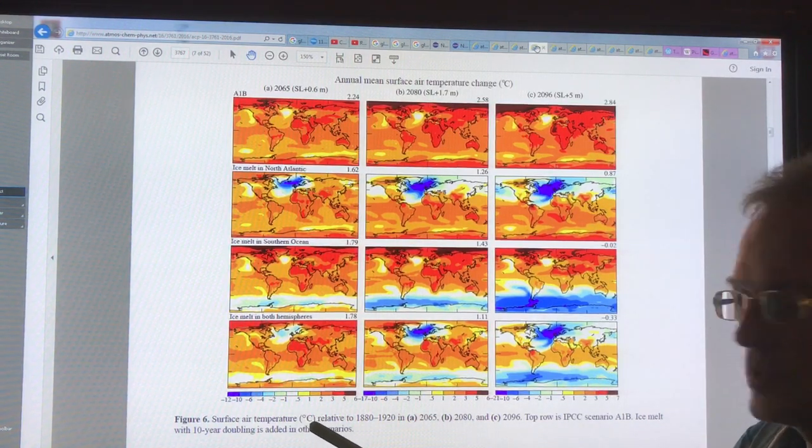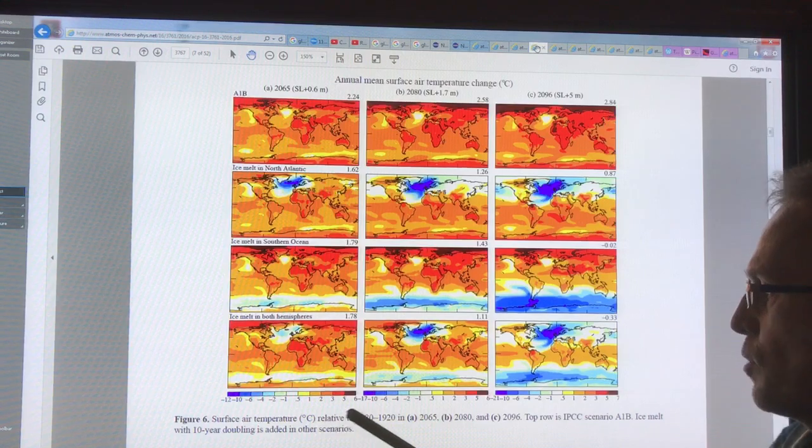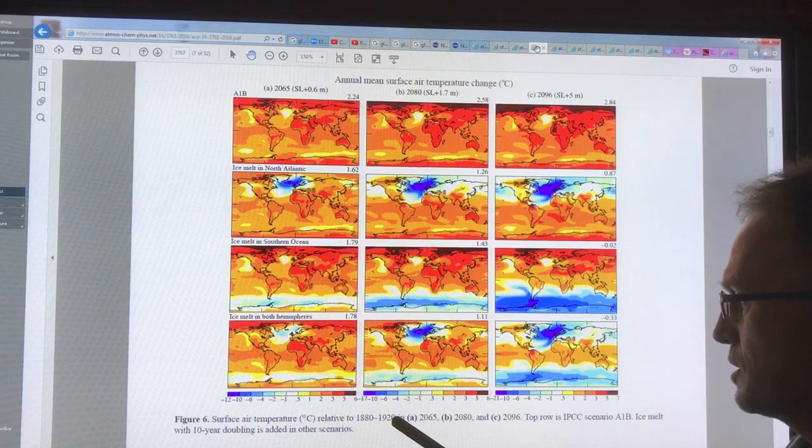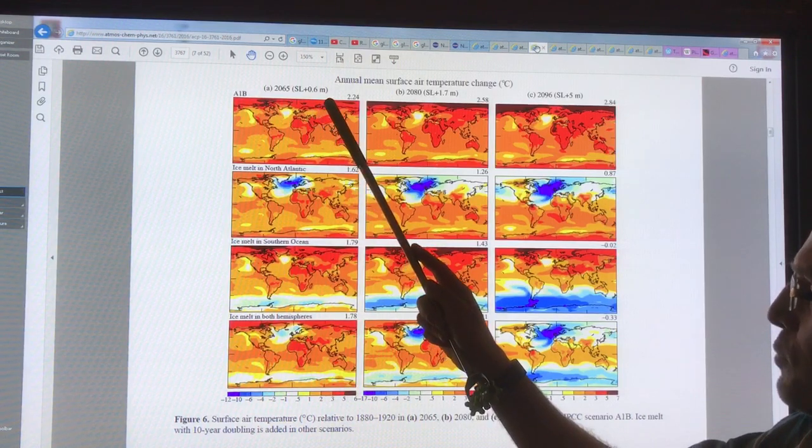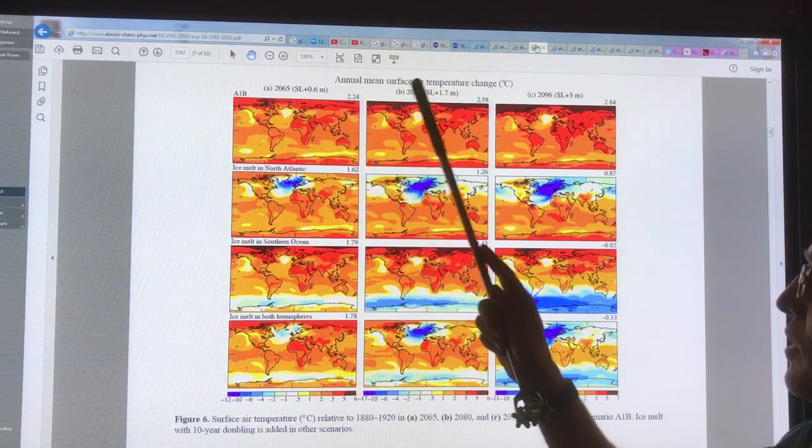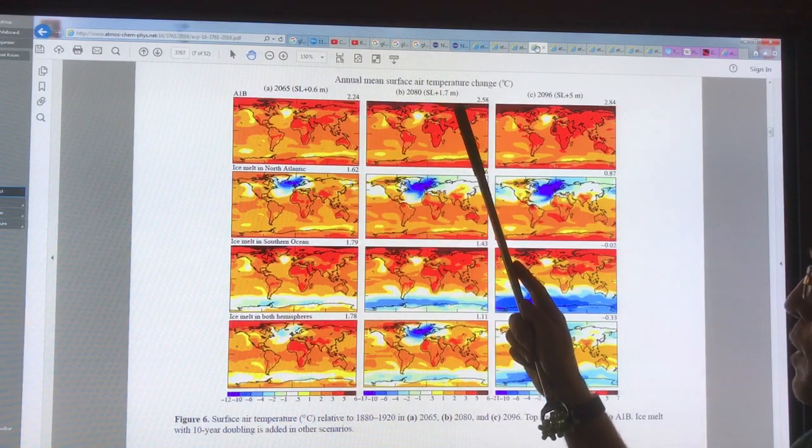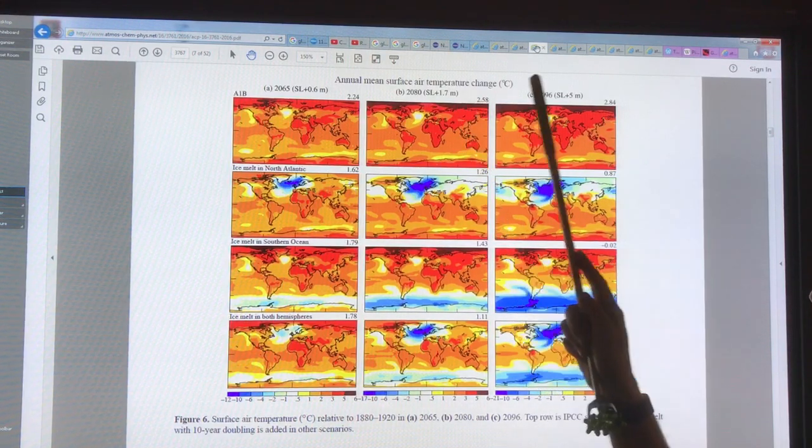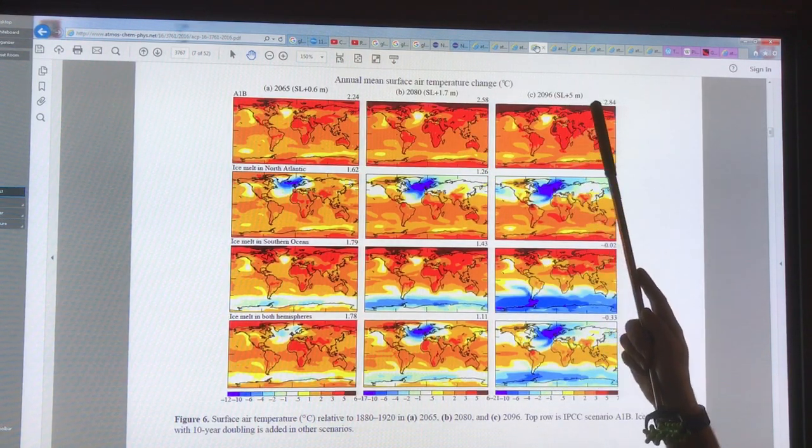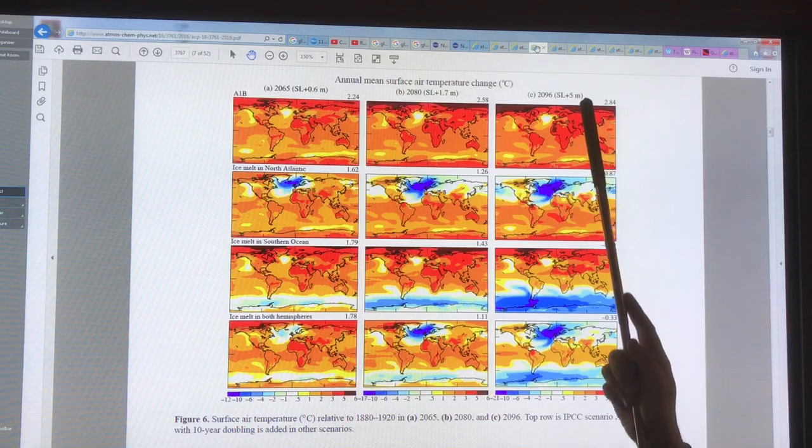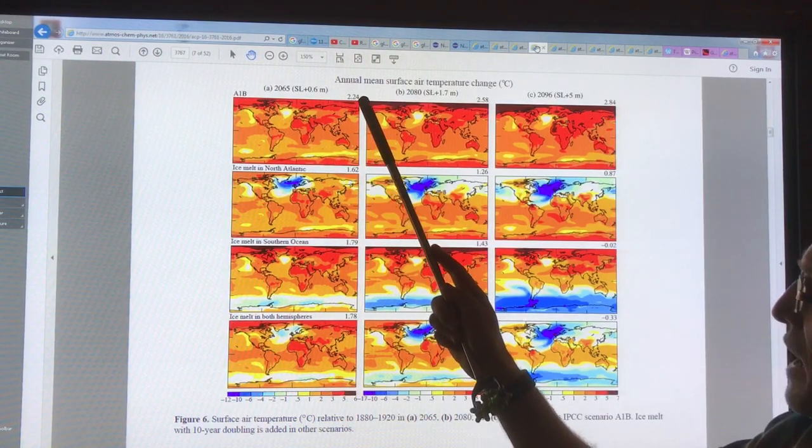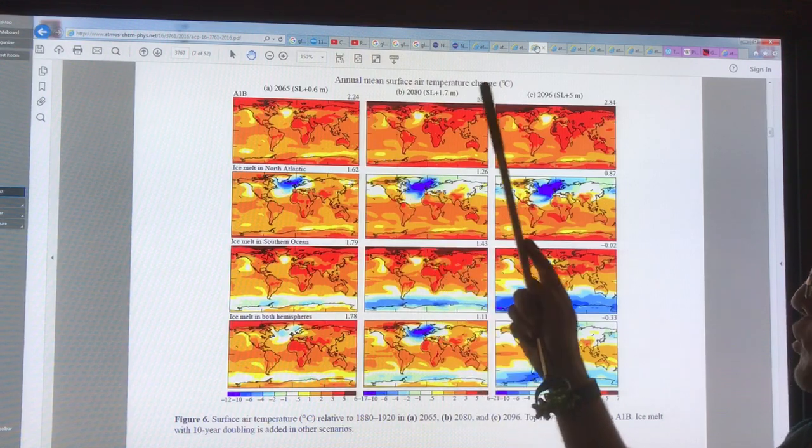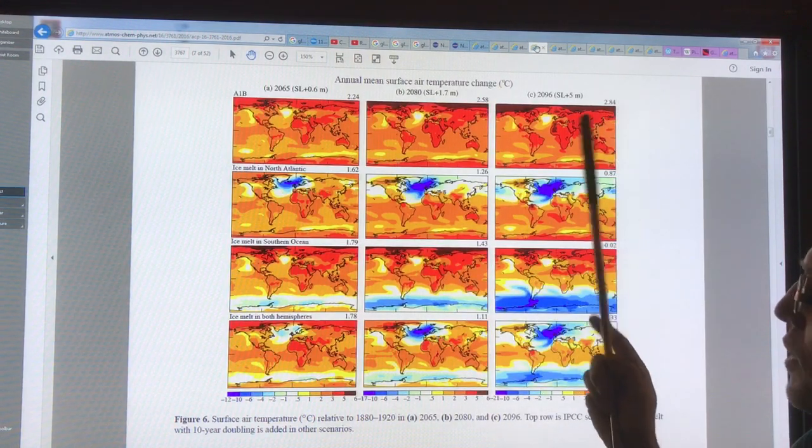What I'm talking about here is surface air temperature of the globe in degrees Celsius relative to the 1880 to 1920 average. In 2065 with a 0.6 meter sea level rise, in 2080 with 1.7 meter rise, and in 2096 with a 5 meter rise. The top shows 2.24 average global temperature rise, 2.58, and 2.84.